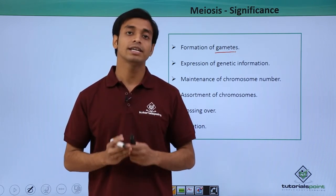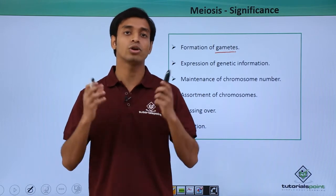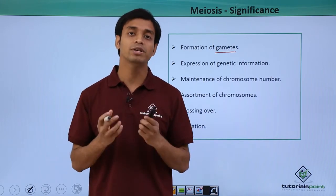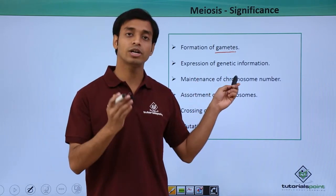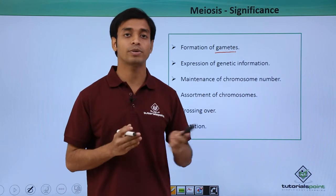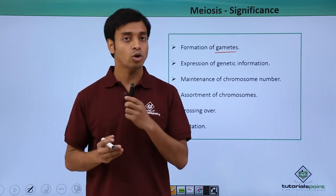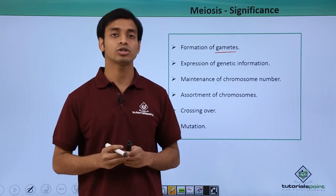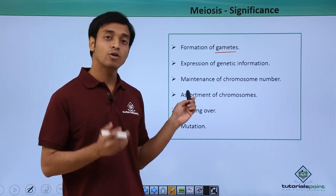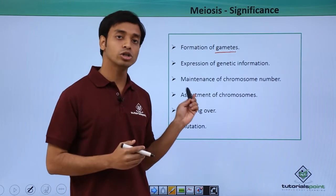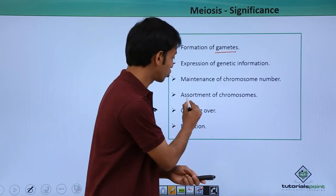But due to the process of meiosis, the number is halved before the gametes fuse. Hence the chromosome number of a particular organism or species is maintained only because of the process of meiosis.